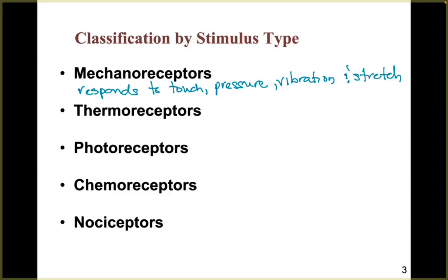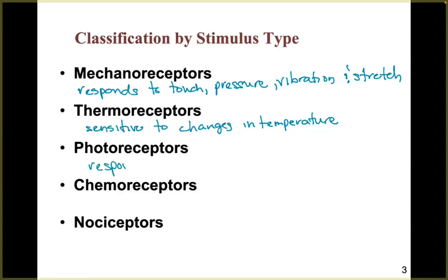Thermoreceptors are sensitive to changes in temperature. Photoreceptors, which we'll cover in the next lecture, respond to light energy — an example of where you find these is in the retina.